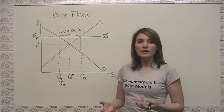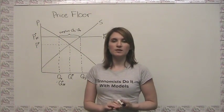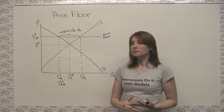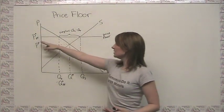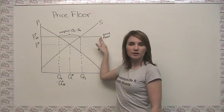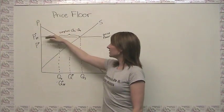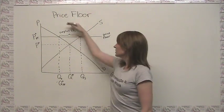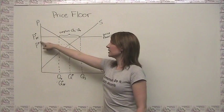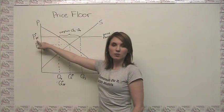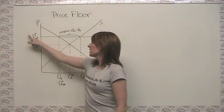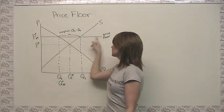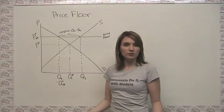To understand what price and quantity are going to persist in a market with a binding price floor, we can just look at the graph. The price is going to try to get as close to the original equilibrium price as possible, so it's going to bump up against this price floor. We can say that our equilibrium price under the price floor situation is P* sub PF — which is simply the price at which the price floor is set.